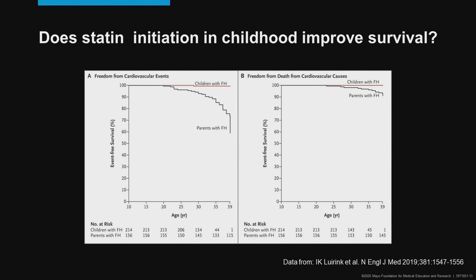For individuals that have very severe elevation of LDL or homozygous forms of FH, lipoprotein apheresis can be utilized. There are no prospective trials that demonstrate that statin initiation in childhood improves survival. However, retrospective data from Dutch investigators showed that in children with FH where therapy was started early, their outlook was better than in their parents with FH in whom statin therapy was started late. Both cardiovascular events and death from cardiovascular causes were reduced.